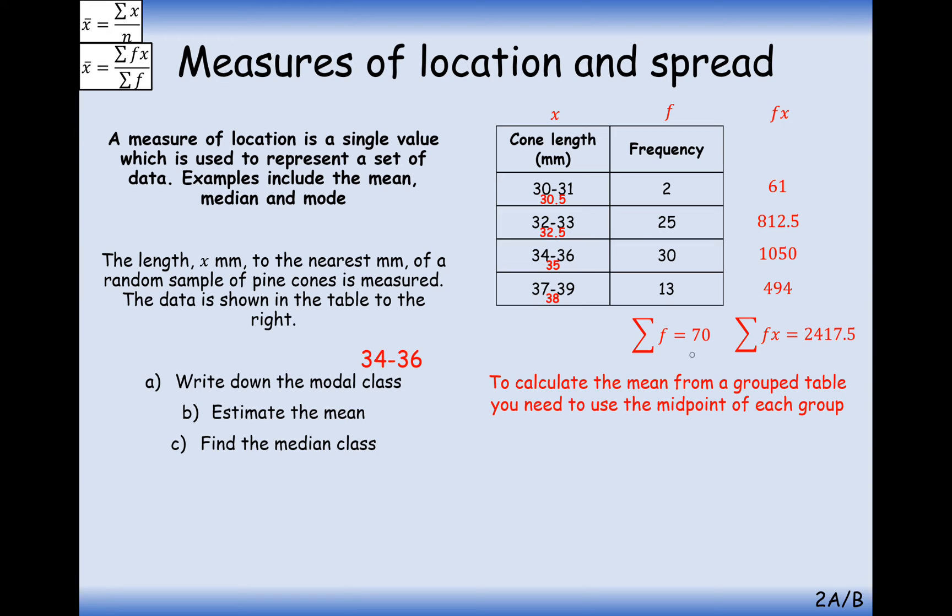So the sum of the frequency times the data value equals 2417.5. And we now need to divide this by the total frequency. So all the frequency values added up together gives us how many pine cones they've measured in total. So it's sum of fx divided by sum of f. And that equals 34.5. Okay, so that mean value there is 34.5.